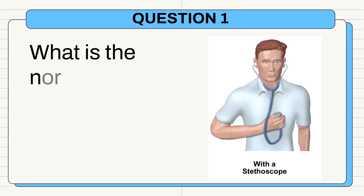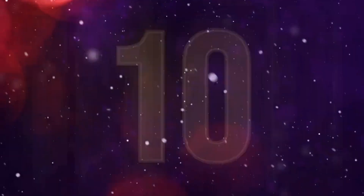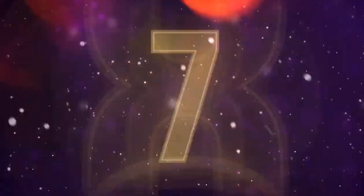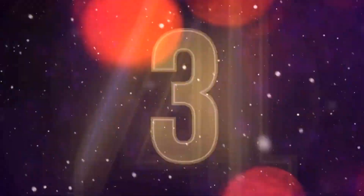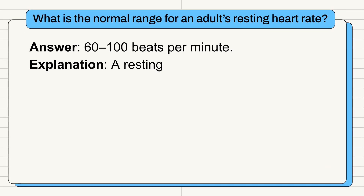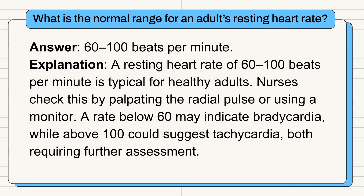Question 1: What is the normal range for an adult's resting heart rate? Answer: 60 to 100 beats per minute. A resting heart rate of 60 to 100 beats per minute is typical for healthy adults. Nurses check this by palpating the radial pulse or using a monitor. A rate below 60 may indicate bradycardia, while above 100 could suggest tachycardia. Both require further assessment.